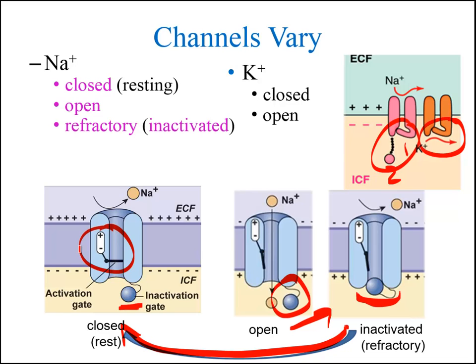Ligand-gated channels, on the other hand, can enter the refractory state due to prolonged exposure to their ligand — a process known as desensitization. This can be due, for example, to phosphorylation of part of a channel through the action of a second messenger that alters the conformation of the channel.